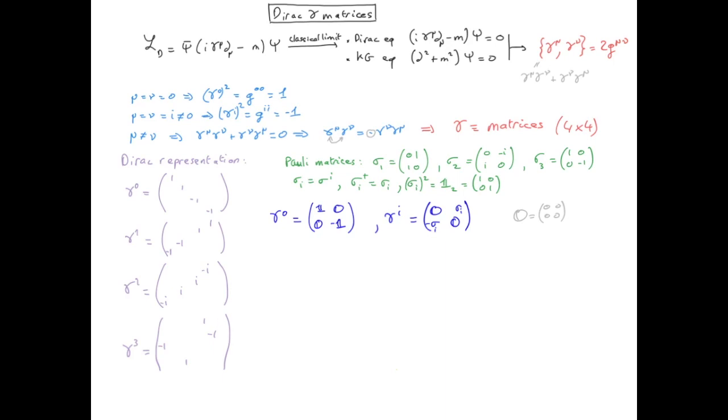In fact, the Hermitian conjugate of gamma mu can be expressed as gamma naught, gamma mu, gamma naught, which you can easily show by replacing mu by 0, 1, 2, or 3. This is a very handy expression which we will use repeatedly in our calculations, and same for gamma naught squared equal to one.